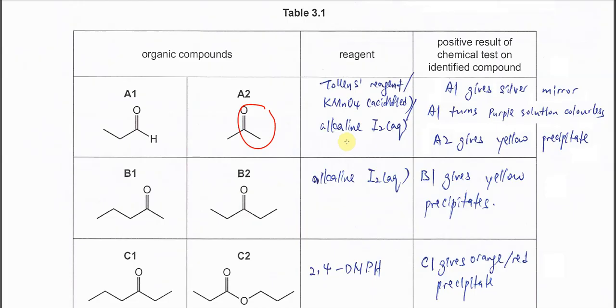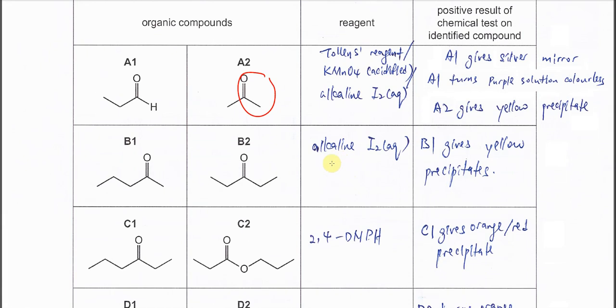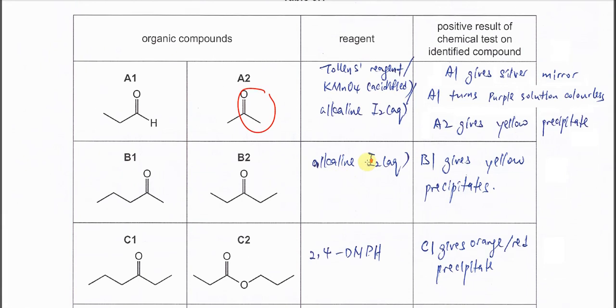So if you use this one, then later there is another part, right? They need to use alkaline iodine. So better choose Tollen's or the KMnO4.